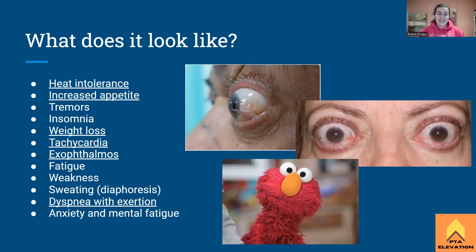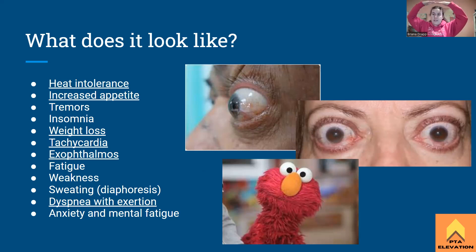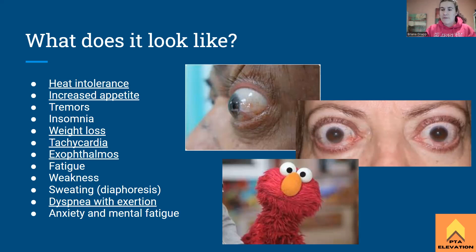We'll also have fatigue, weakness, and sweating — they'll become diaphoretic. There will be dyspnea upon exertion. Because they're already doing too much and already at a high rate, they don't have a big tolerance for exercise. If you start exercising them, they'll get out of breath right away because they're already at that high level — their basal metabolic rate is already raised. We'll also see anxiety and mental fatigue because everything is doing too much.